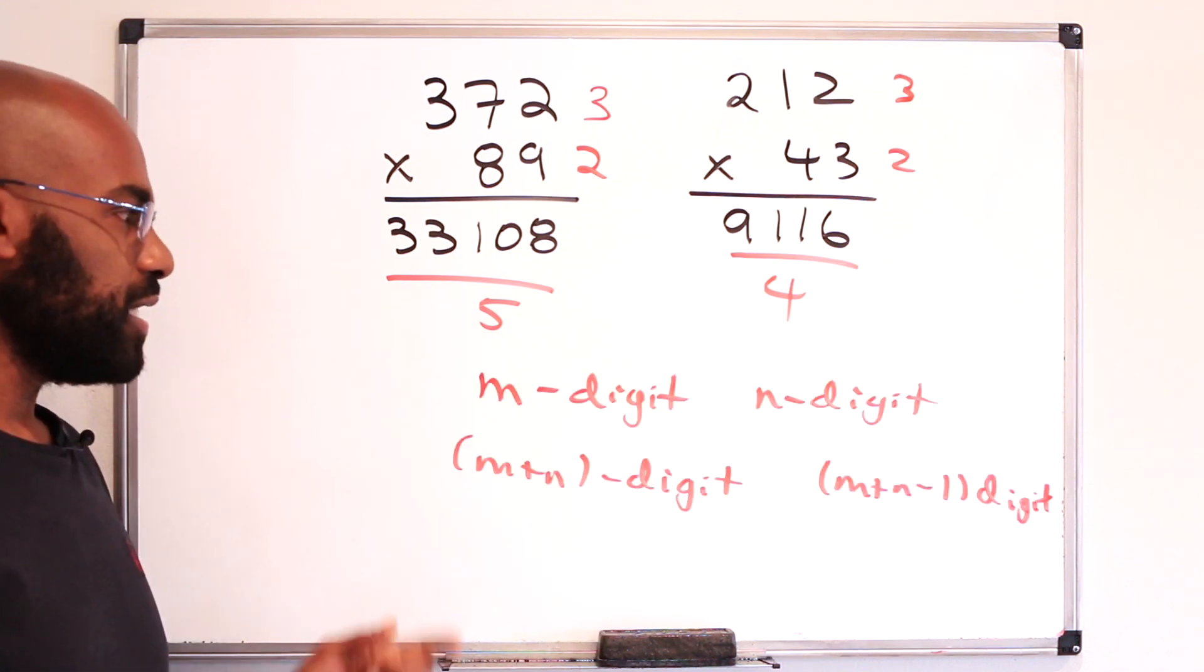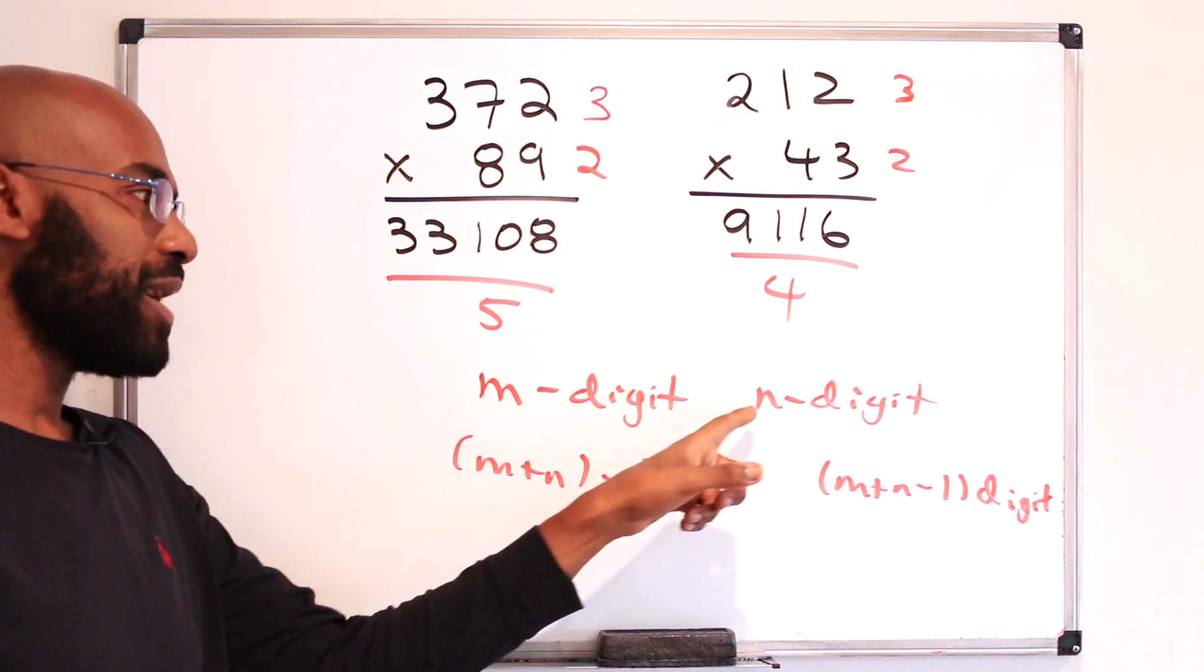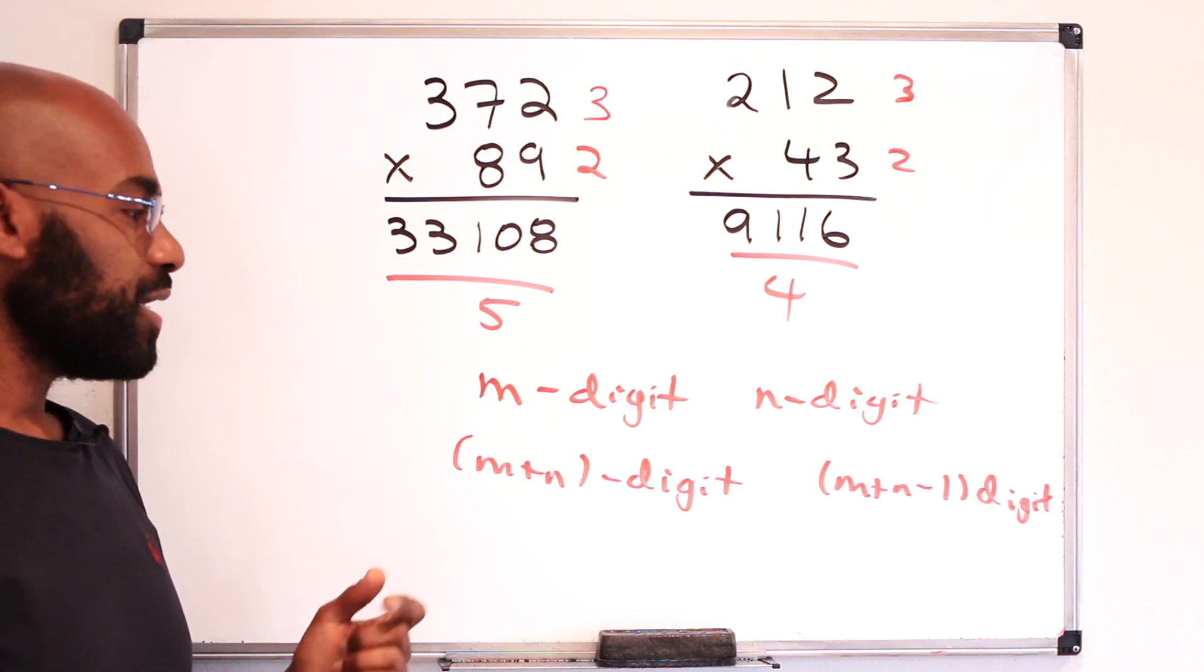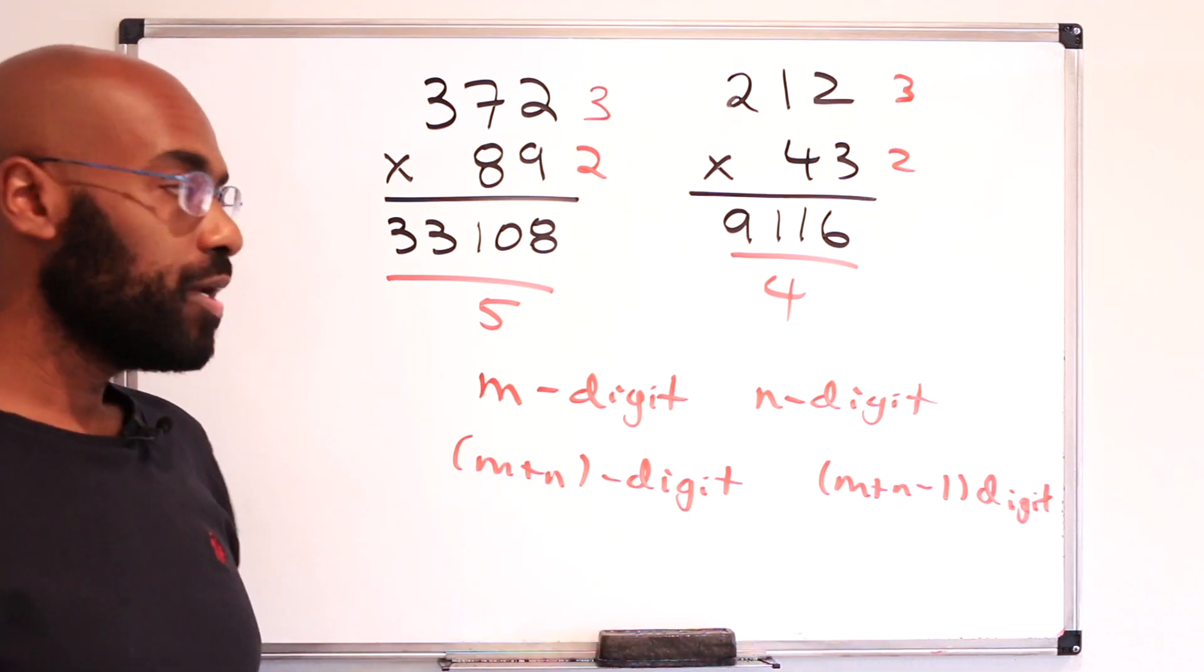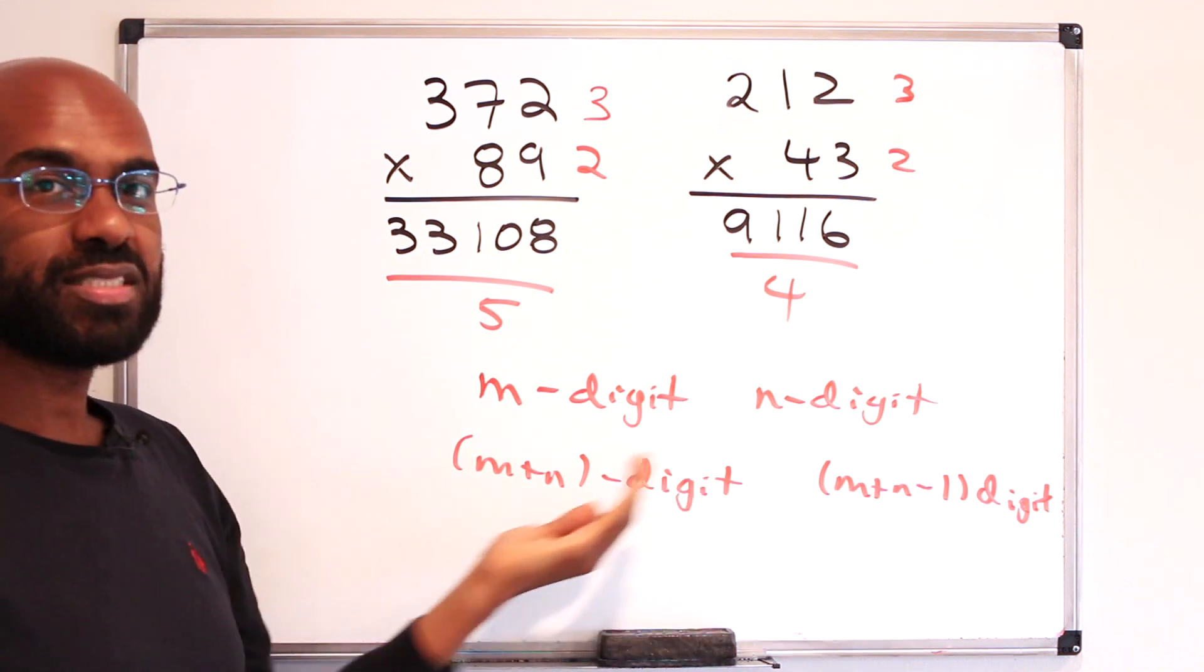Even more generally, if you have an m-digit number and multiply by an n-digit number, then you're going to get an m plus n-digit number or an m plus n minus 1-digit number. What's the probability you'll get one of these instead of one of these?